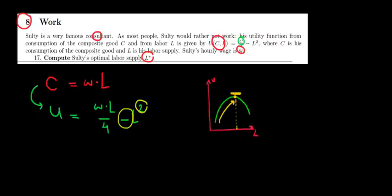So we are looking for the derivative of the utility function with respect to labor. The derivative of the utility function with respect to labor must be equal to 0. So if we differentiate this, what do we get?